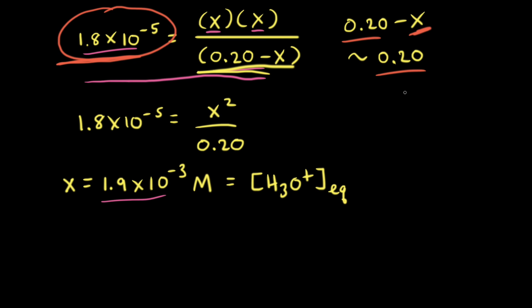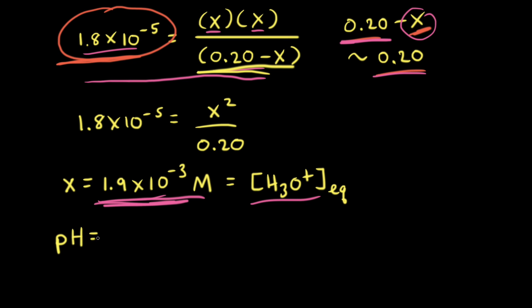Now that we have a value for X, we can confirm it is very small compared to 0.20, validating the approximation. This concentration of hydronium ion comes only from the ionization of acetic acid; any contribution from the auto-ionization of water is much smaller and can be ignored. Next, we find the pH: pH equals the negative log of the hydronium ion concentration, so the negative log of 1.9 times 10 to the negative third, which equals 2.72.